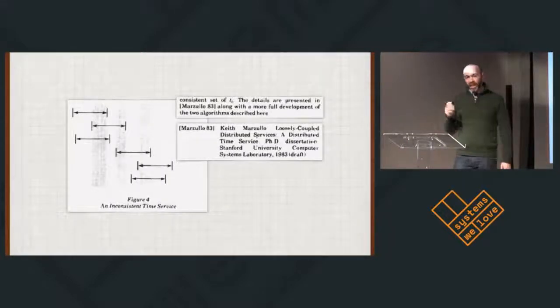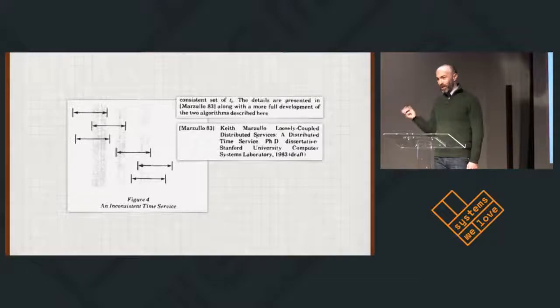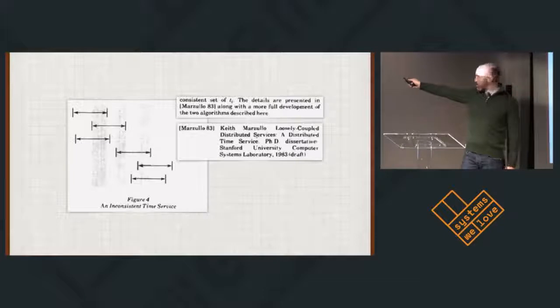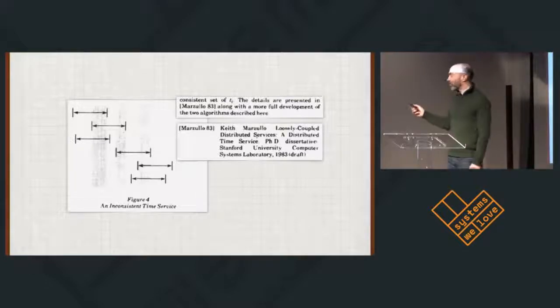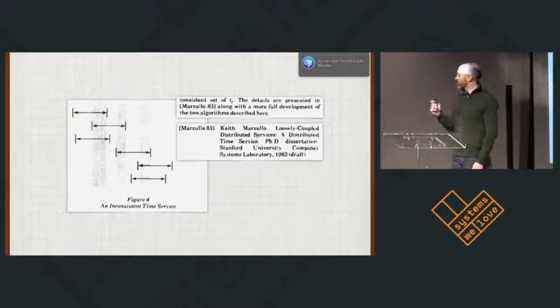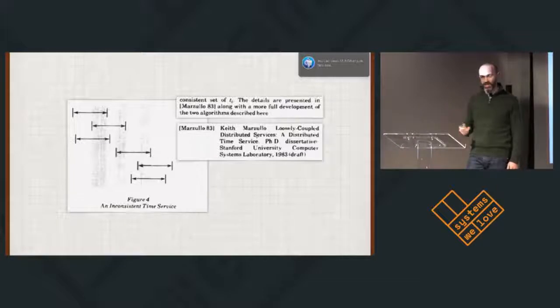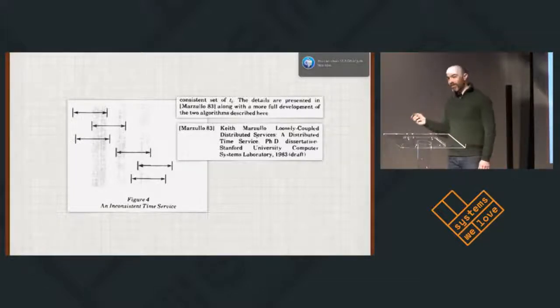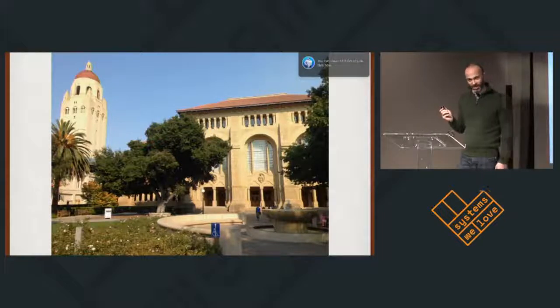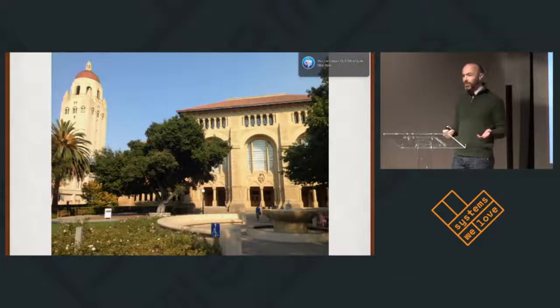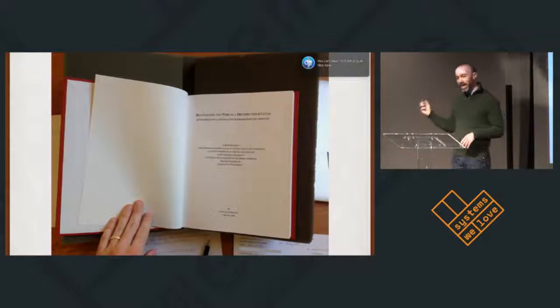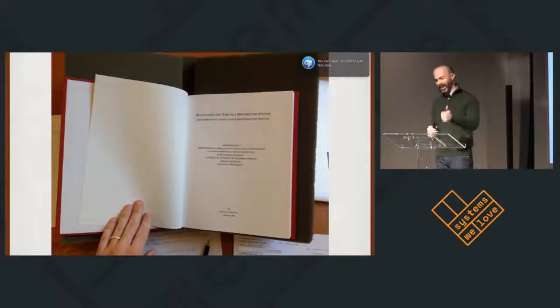The paper ends by saying, I have a solution for this, but you have to go read my thesis to find it. This is a problem because that's not the name of his thesis, and that's not the year it was published. It was actually published in the next year, 1984, which is still a problem, because Stanford didn't start digitizing theses until 1985. So if you want to read this thesis, you have to go to Stanford. If you give them a couple days notice, they will go to their special collections library and pull out the master copy of Keith Marzullo's thesis for you to read. You can sit in their nice green room and read it. It's a lovely experience. I highly recommend it.